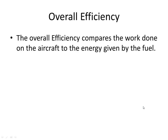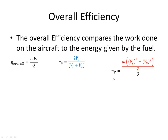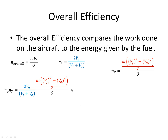Now if we look at the overall efficiency, it compares the work done on the aircraft to the amount of fuel energy we have burned. The work done on the aircraft was thrust times Va and the fuel energy is Q. The propulsive efficiency is 2Va / (Va + Vj) and the thermal efficiency is the change in kinetic energy over Q. If I multiply these two by each other, I get this, and quite simply I can get rid of the 2s.